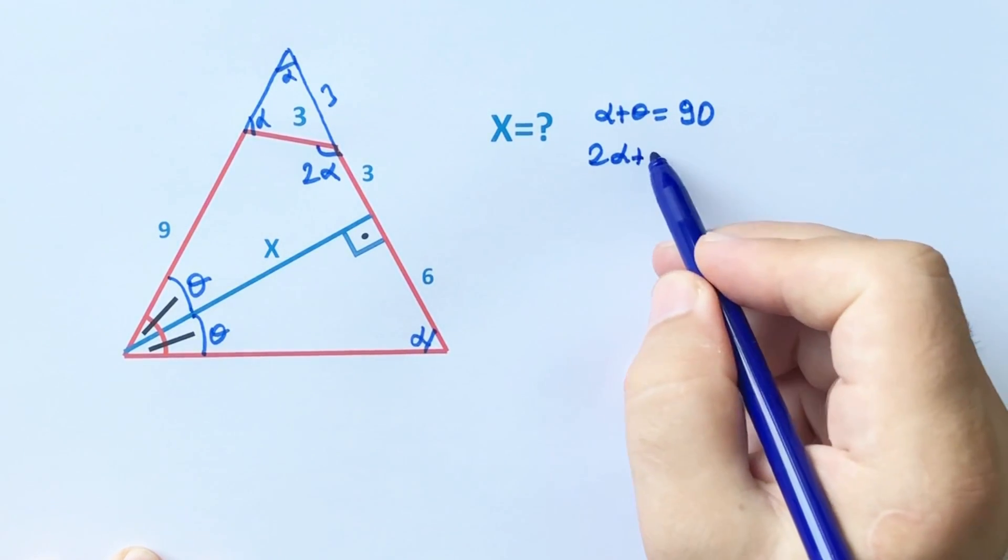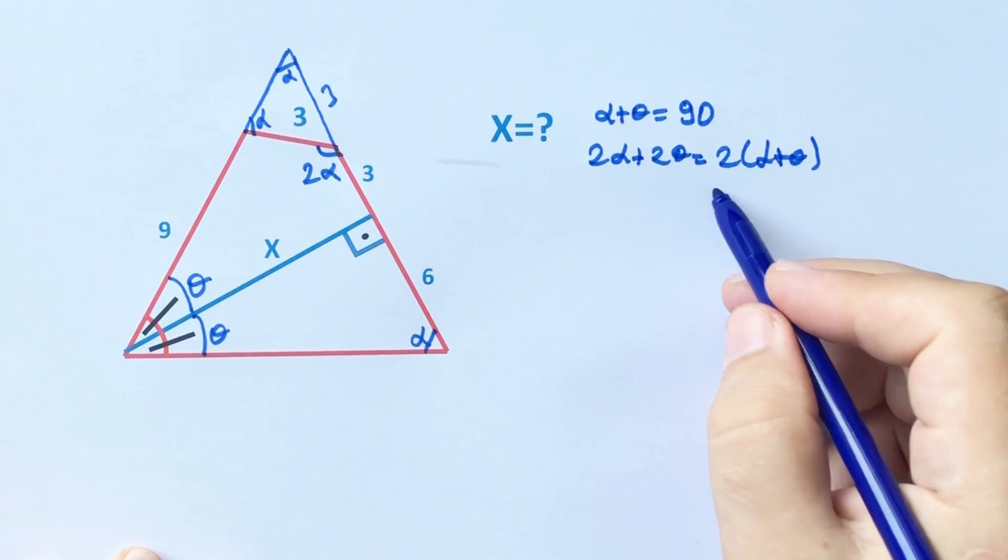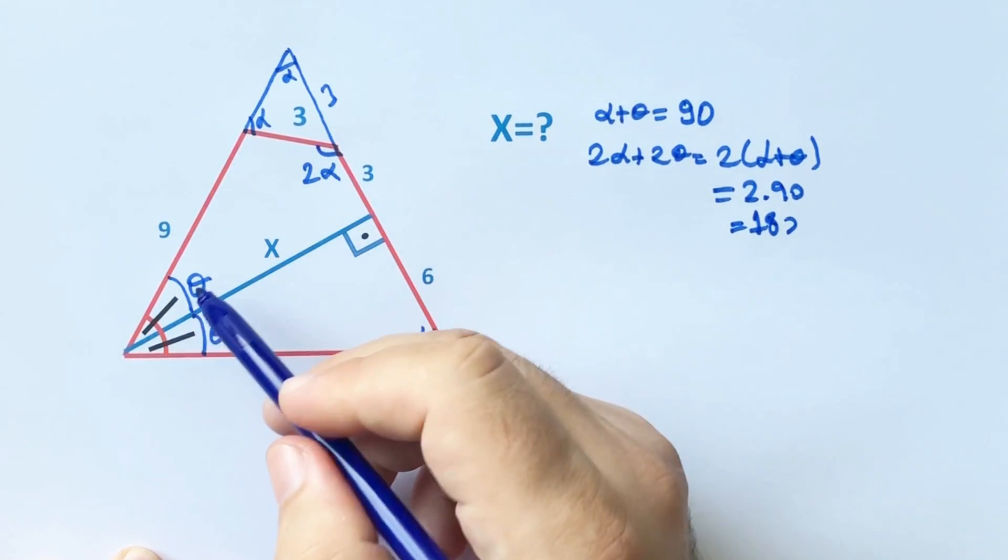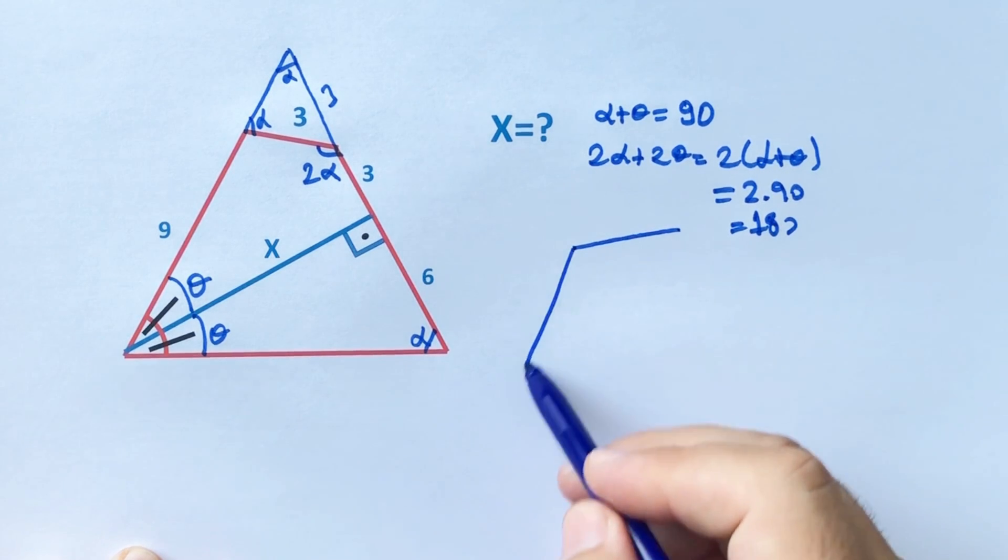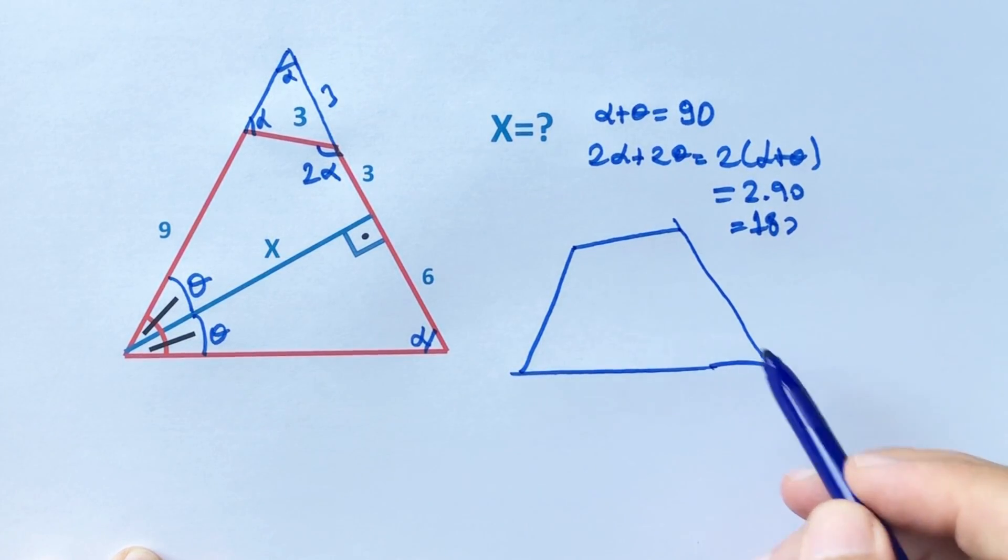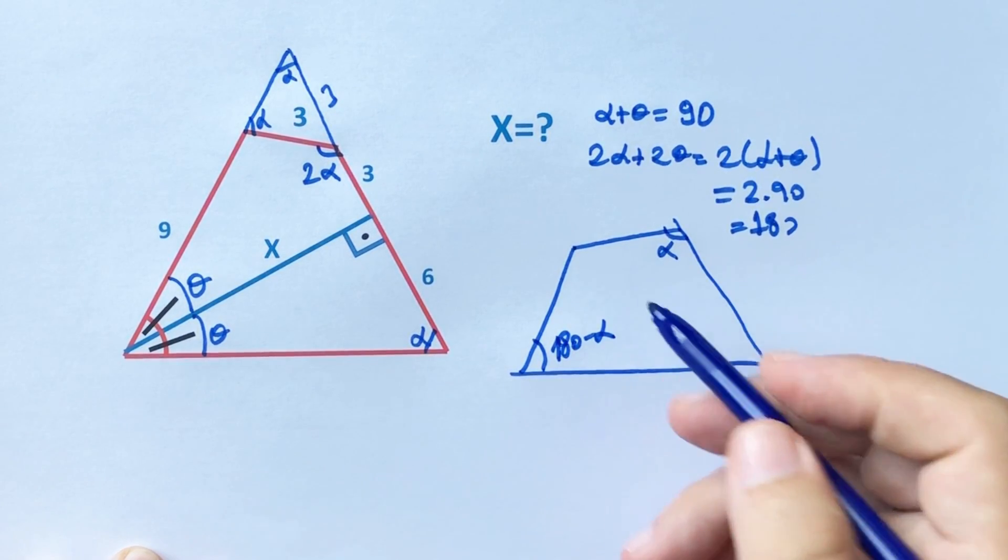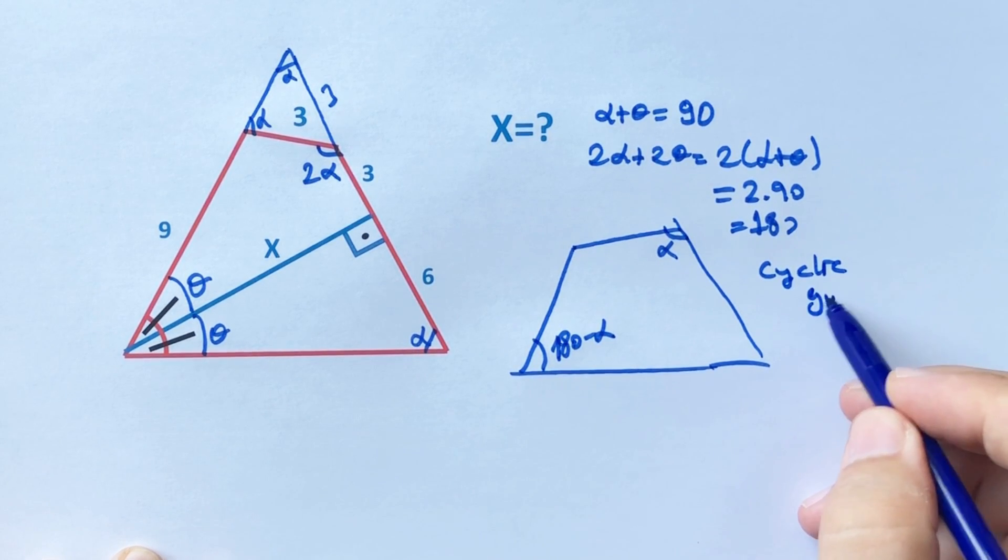Notice that alpha plus theta equals 90 degrees. Therefore, 2 alpha plus 2 theta equals 180 degrees. Let's remind you, if you have a quadrilateral and sum of the opposite angles equals 180 degrees, that means this quadrilateral is exactly a cyclic quadrilateral.